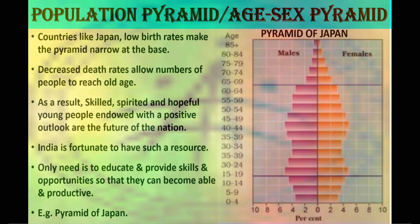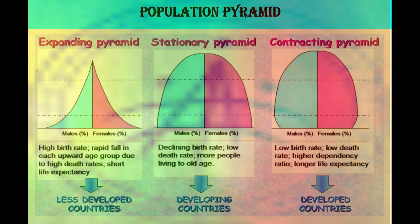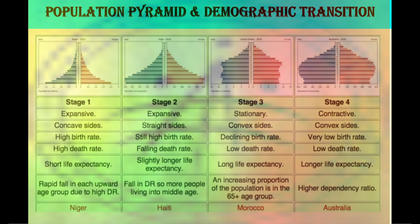India is fortunate to have such a resource. The only need is to educate and provide skills and opportunities so that young people can become able and productive. In general, there are three types of population pyramid: expanding, stationary and contracting. In an expanding population pyramid, both birth rate and death rate are high and it is generally seen in poor countries. In a stationary population pyramid, there is a decline in birth rate and death rate is also low. In a contracting population pyramid, birth rate decreases and in the near future elderly people make up the largest section of the population, with higher life expectancy.